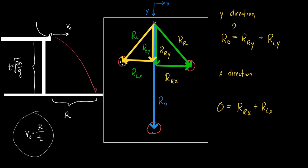In the X direction, R-right-X plus R-left-X should cancel out because there should be no momentum in the X direction. Your job is to see if that is true. A mathematical way to determine how far apart the numbers are is a percent difference. I would do a percent difference calculation.